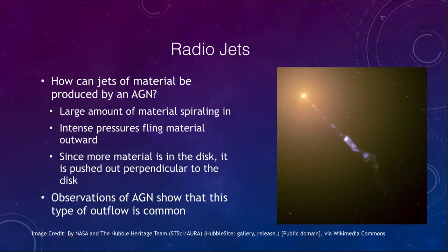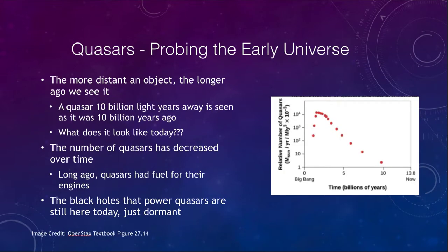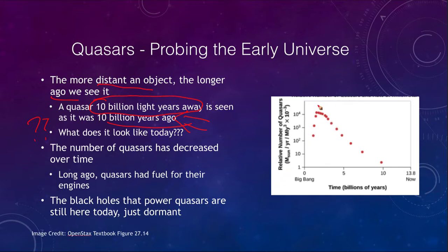Quasars are a way to study the early history of the universe. The more distant an object is, the longer ago we see it — a quasar 10 billion light years away is seen as it was 10 billion years ago. The number of quasars peaked about one to two billion years after the Big Bang and has declined very quickly. After about 10 billion years ago, we don't see any. We had tens of thousands early on, hundreds by 10 billion years, down to just the last handful.